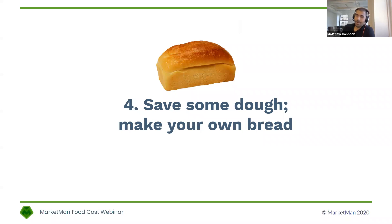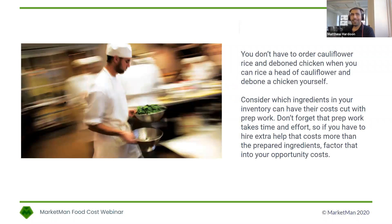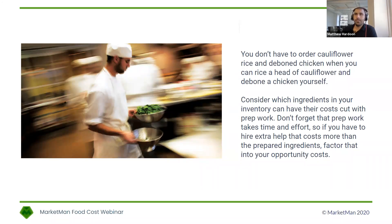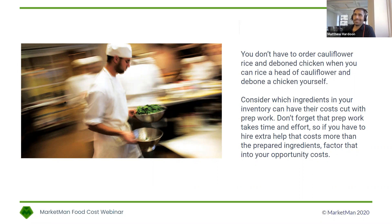Number four: save some dough and make your own bread. One thing we've learned over the course of the past six or seven months with the global changes going on is a shift to ghost kitchens, satellite kitchens, and multi-unit operators working side by side. If you have three or four different coffee shops in one city, maybe one larger location does all the production for the sake of volume and scale, then transfers products to other locations — the concept of a commissary kitchen. Bottom line: consider which ingredients in your inventory can cut their costs with just some prep work, and you'll save some very meaningful dollars and cents.